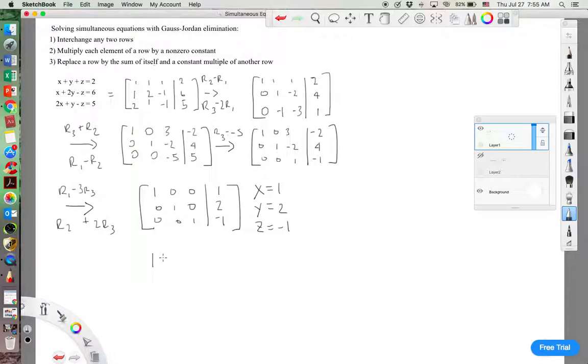x is 1, 1 plus 2, plus a negative 1. These cross out, and we get 2. Satisfies our first equation.